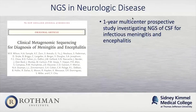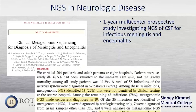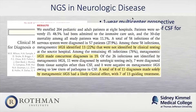A slightly larger trial — a one-year multicenter prospective study — looked at NGS of the cerebrospinal fluid for infectious meningitis. Again, NGS was able to identify many of the infections not identified through standard clinical culture testing, and treatment based on this information had a clinical benefit for many of these patients.